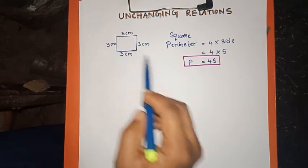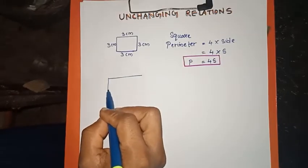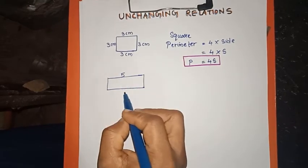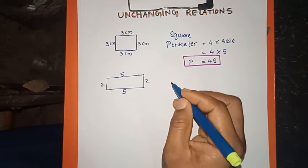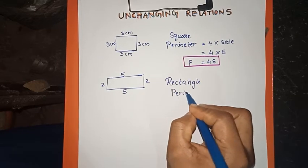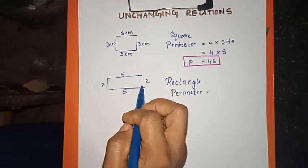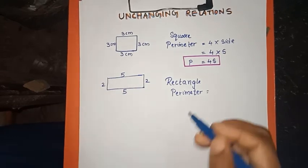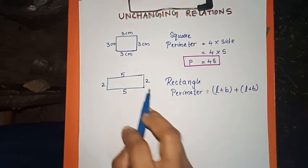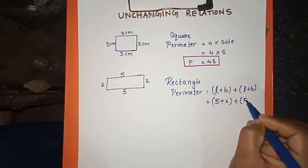Now, how do we make a formula for a rectangle? In a rectangle, the opposite sides are equal. Here we say 5 and 2, and again 5 and 2. The perimeter of the rectangle is equal to length plus breadth plus length plus breadth — we can add length plus breadth plus length plus breadth, which gives 5 plus 2 plus 5 plus 2.